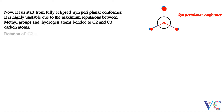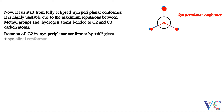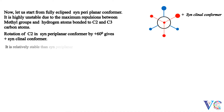Rotation of C2 in the syn-periplanar conformer by plus 60 degrees gives the plus synclinal conformer. It is relatively stable compared to the syn-periplanar conformer, due to partial staggering.